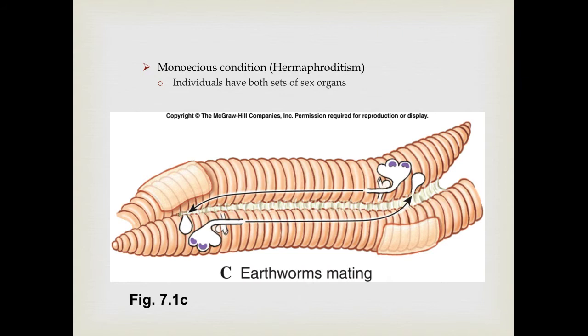However, many animals are monoecious — the monoecious condition or hermaphroditism — where an individual has both sets of sex organs. An individual is not male or female; it's both. Here you can see two mating earthworms, which are both accepting sperm from each other to fertilize their own eggs.